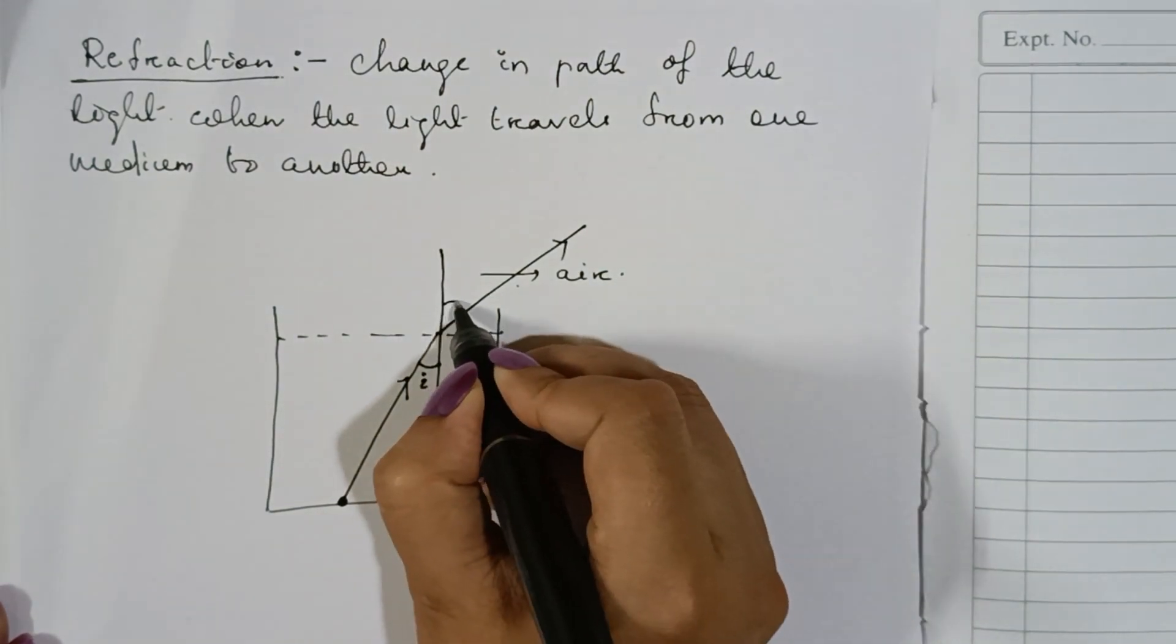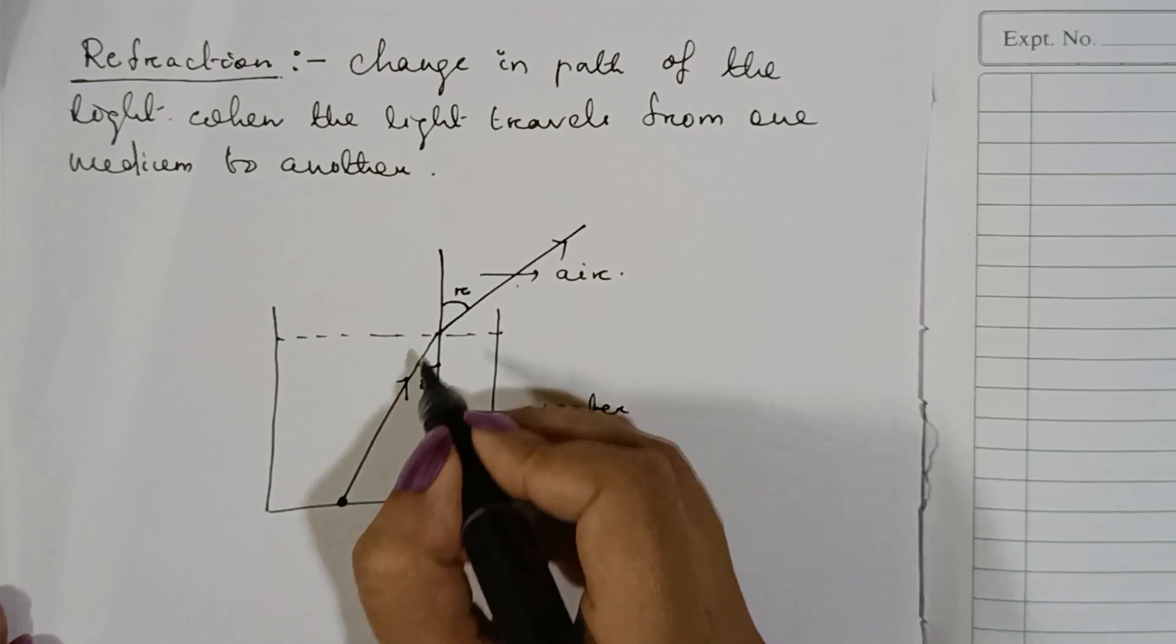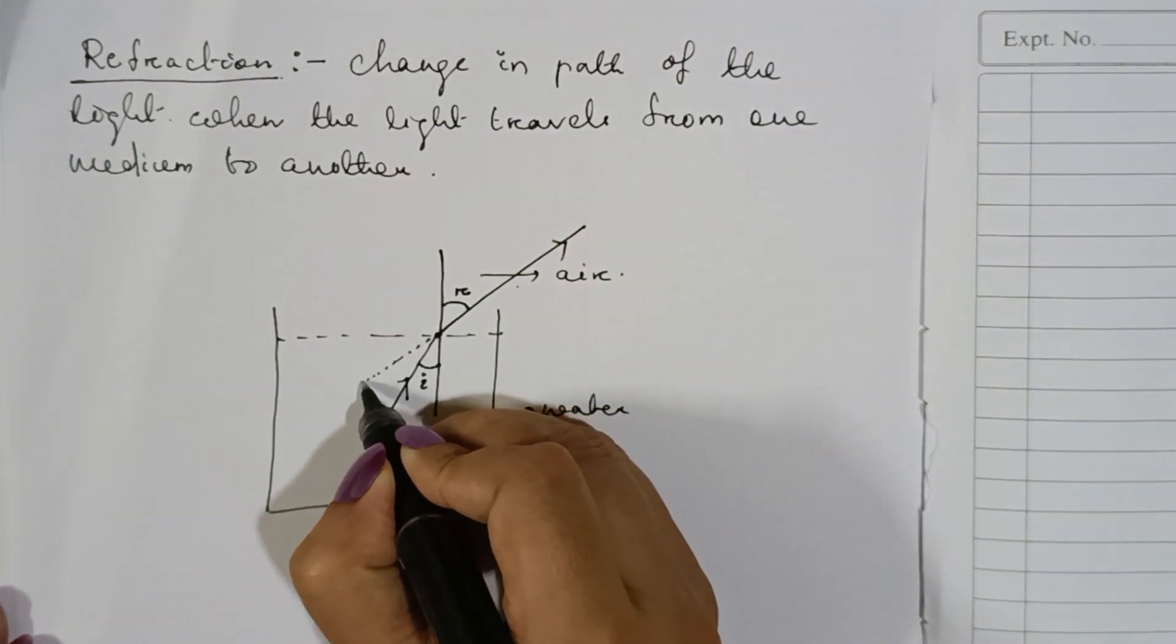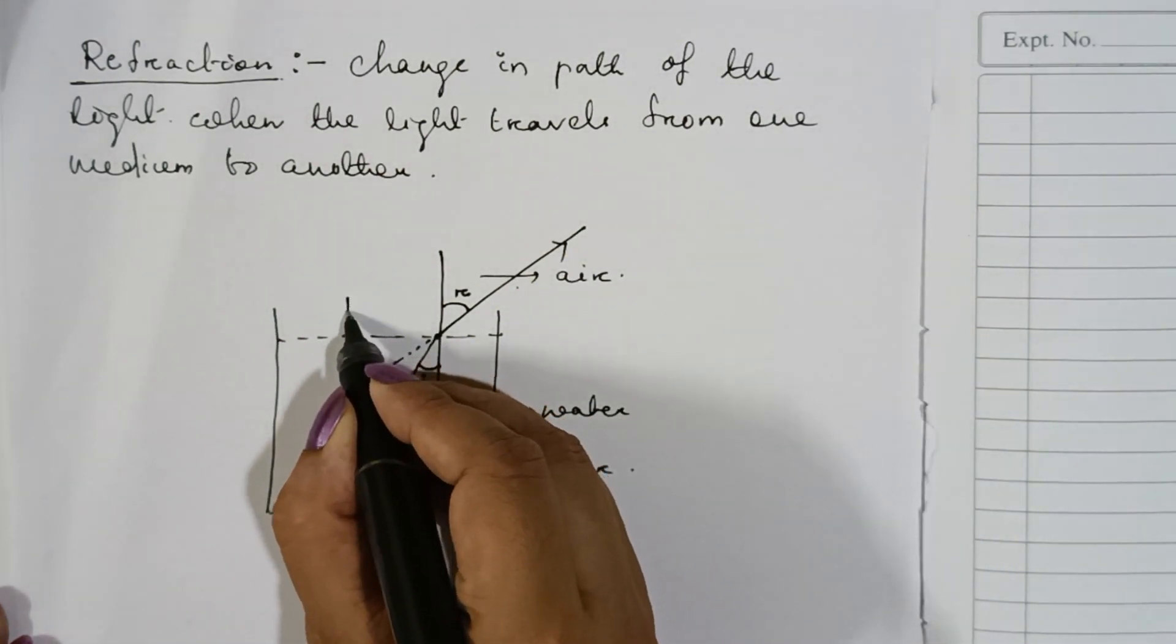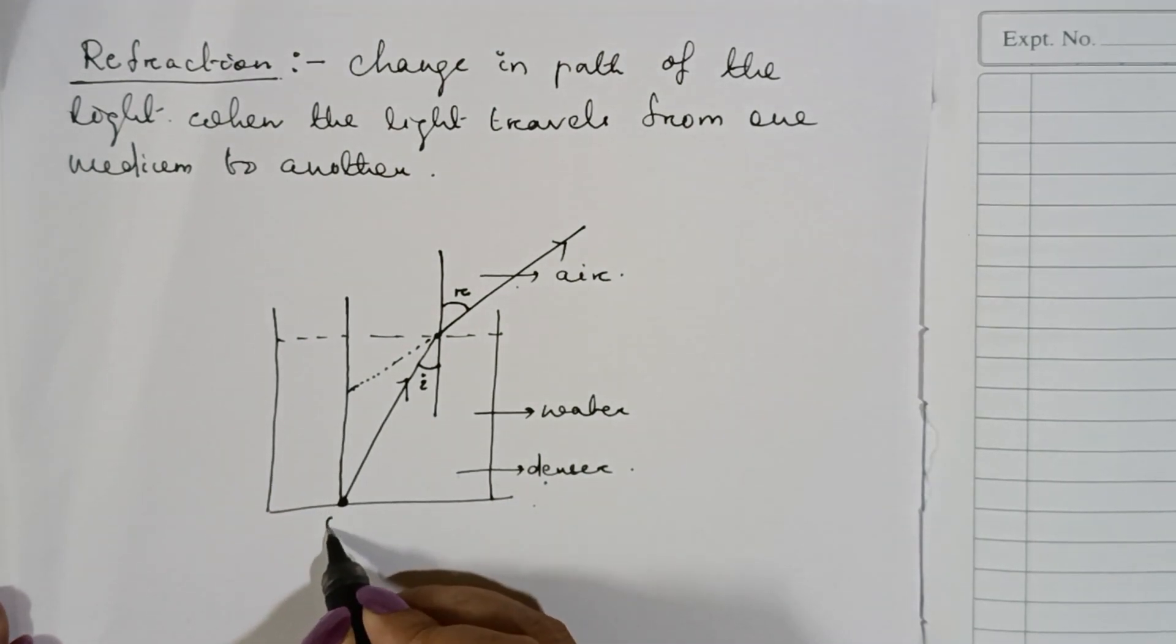So this is called angle of refraction. Now you take the ray in the backward direction. Extend the ray in the backward direction and draw a normal over here. This is your object.